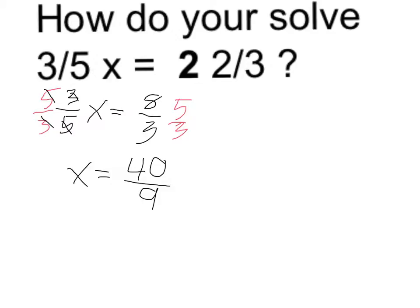40 ninths is not the nicest improper fraction. I can convert that back to a mixed number because 9 goes into 40 4 times. 9 times 4 is 36.